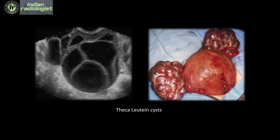Because of the high level of beta-HCG in these cases, they most often end up being associated with bilateral theca lutein cysts, which is basically the same principle as ovarian hyperstimulation.